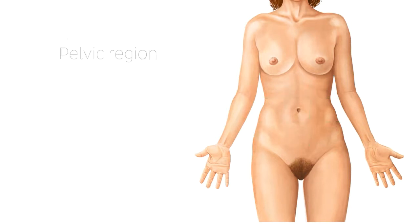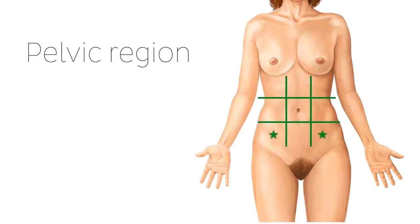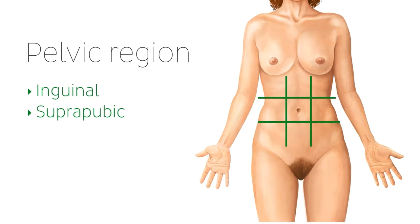The pelvic and abdominal regions are interconnected. When referring to the pelvic region, the left and right iliac regions of the abdomen can also be called the left and right inguinal regions. The hypogastric region of the abdomen can also be called the pelvic or suprapubic region. And directly inferior to it lies the pubic region, which contains the genitals.